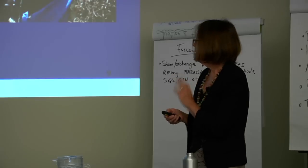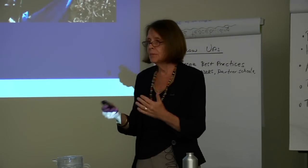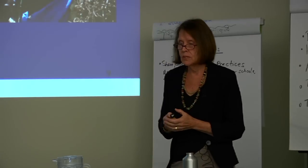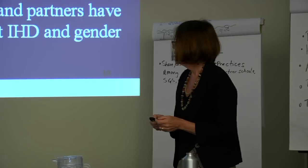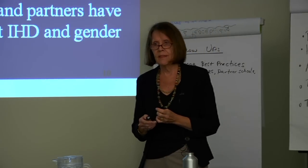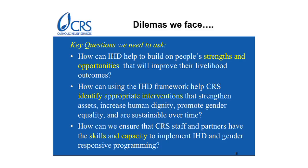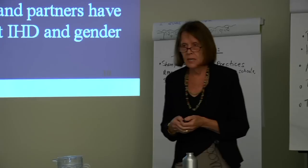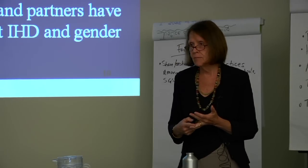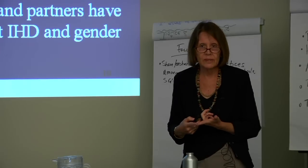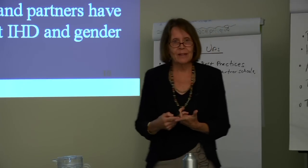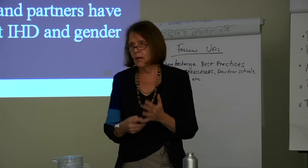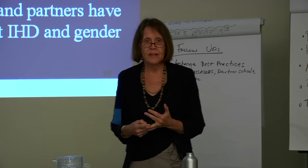CRS has a whole strategy around training using the IHD framework. So here are the questions that I think we need to be thinking about as we go through this. How can the framework build on people's strengths and opportunities? When you see an area of drought-stricken Ethiopia, for example, there is no water — it hasn't rained, rain is now three and a half months behind, there is no agriculture, people eat only six to seven months max of the year. How do we respond, and how can we look at that situation in terms of a positive? What are the assets they do have, and how can we make a difference in that kind of environment?